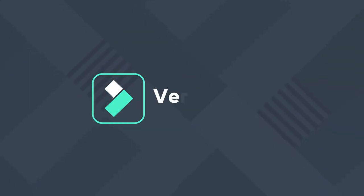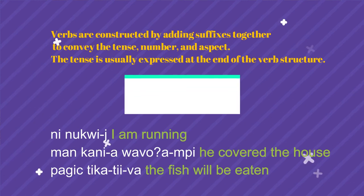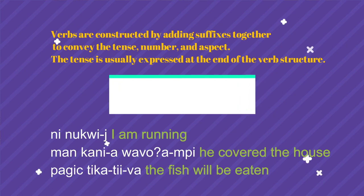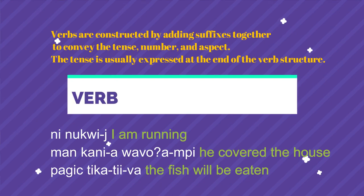Very much like the noun system, verbs are also agglutinative. In Chemehuevi, verbs are usually placed at the end of a sentence or clause. Verbs are constructed by adding suffixes together to convey tense, number, or aspect, and tense is usually expressed at the end of the verb. For example: ni nukui means I am running; man kania wa voampi means he covered the house; pagis tika tiva means the fish will be eaten.